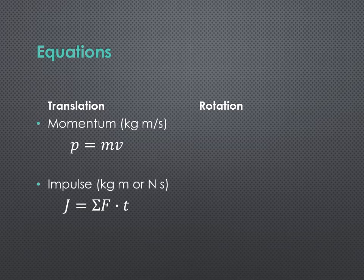Impulse was kilogram meters, or newton seconds, and the variable for impulse is a capital J, and it was equal to the net force applied times the time it was applied for.